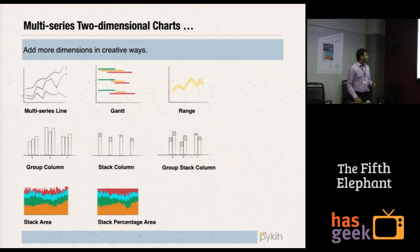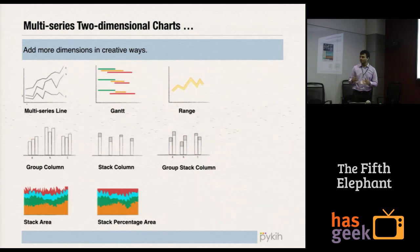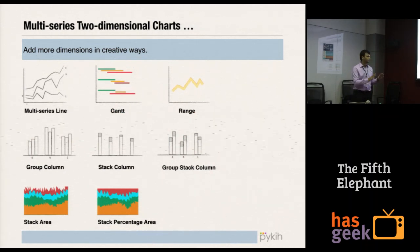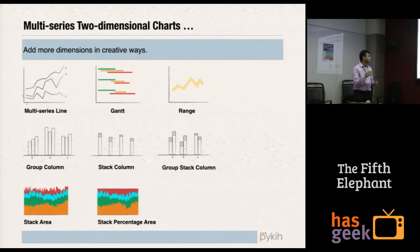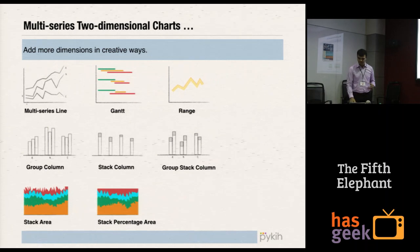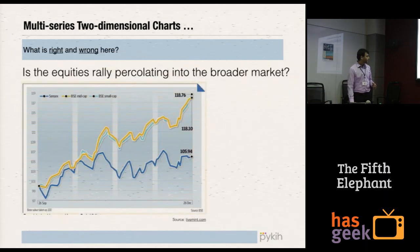These are multi-series two-dimensional charts. When the dimensions start increasing beyond two, you have to use group, stack, percentage area, map charts, multiple lines, etc. Let's look at this example.